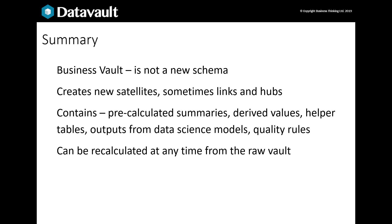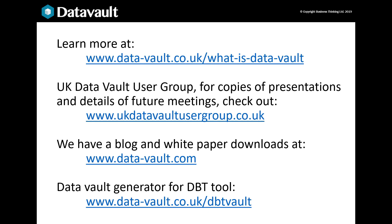That's a quick overview of the Business Vault. In summary: don't be confused — the Business Vault is just a part of the vault, not a separate layer. Business rules create new satellites and sometimes may create a link or hub too. There are different types of rules: summaries, derivations, helper tables, data science output, and quality checks. And we can drop and recalculate the business rules at any time. If you need more detailed information, you can download user group presentations from our UK user group website. We also offer DataVault and information governance related blogs and white papers from our company site. And if you'd like to experiment with the data vault system, we've developed a package for the free-to-use dbt tool — it will generate SQL to load the vault from your metadata. Thanks for listening and hope to see you again.